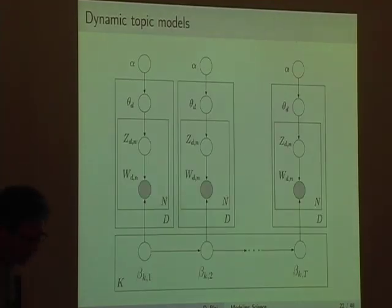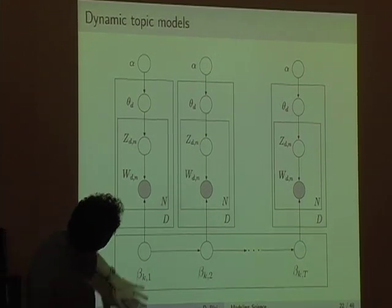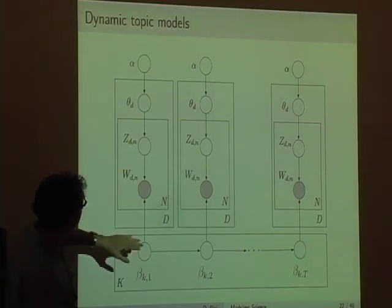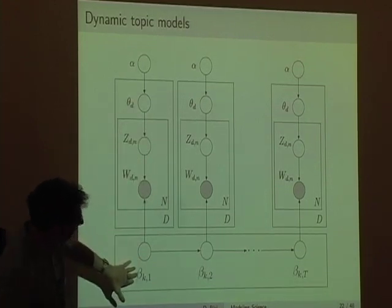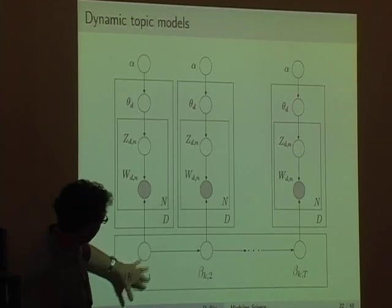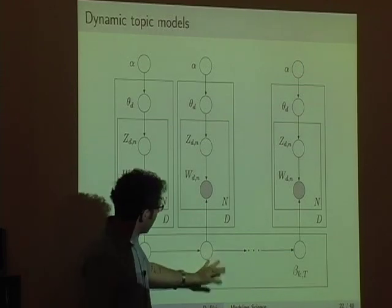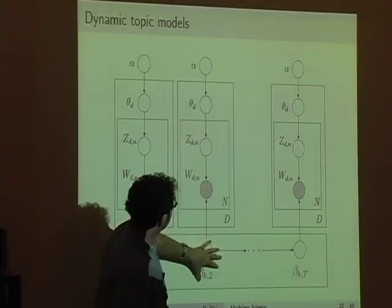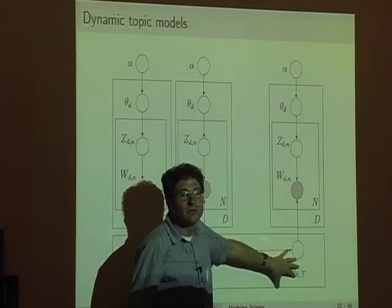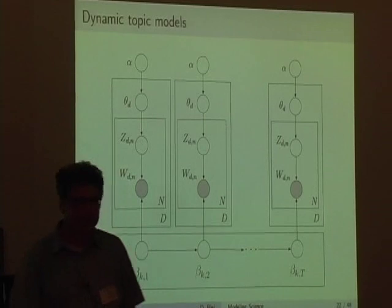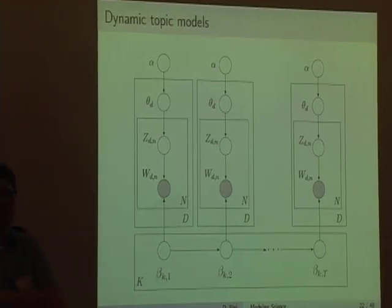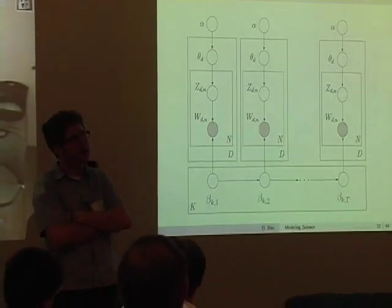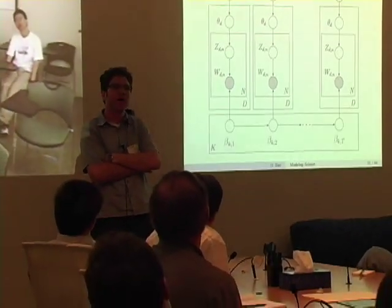As a graphical model, each slice is the same LDA model we described: each document comes from a distribution over topics, choose a topic, choose a word. In 1891, the topics march forward one year and change a little bit. This continues all the way up to 2002. This model assumes the population of topics is identical — you can't have a new topic springing into existence halfway through, though in the posterior it simply won't use a topic until it has enough support.